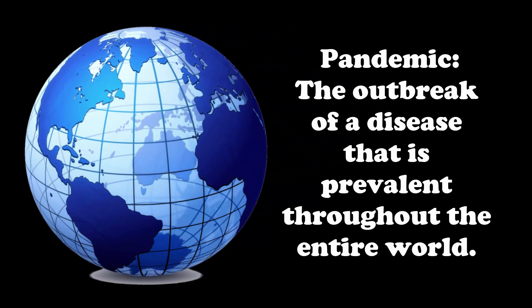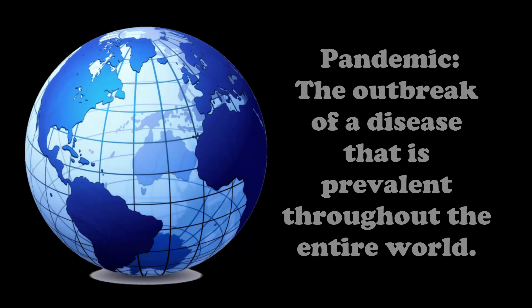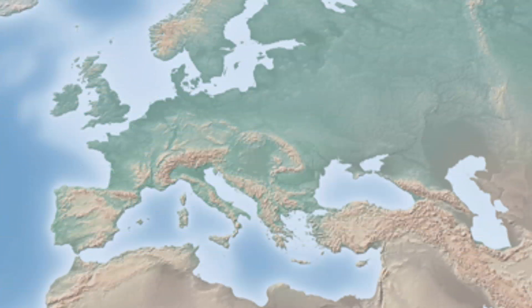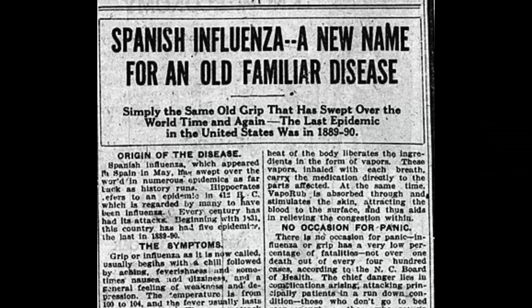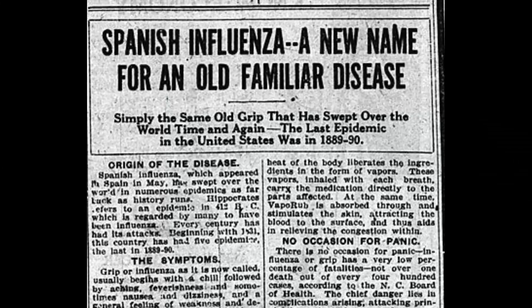A pandemic is defined as the outbreak of a disease that is prevalent throughout the entire world. The international press focused on the disease as it made its way out of France and into the Iberian Peninsula. The country affected the most at that time was Spain. Therefore, many in the media began referring to it as the Spanish flu, which is the name it is still known by to this day.